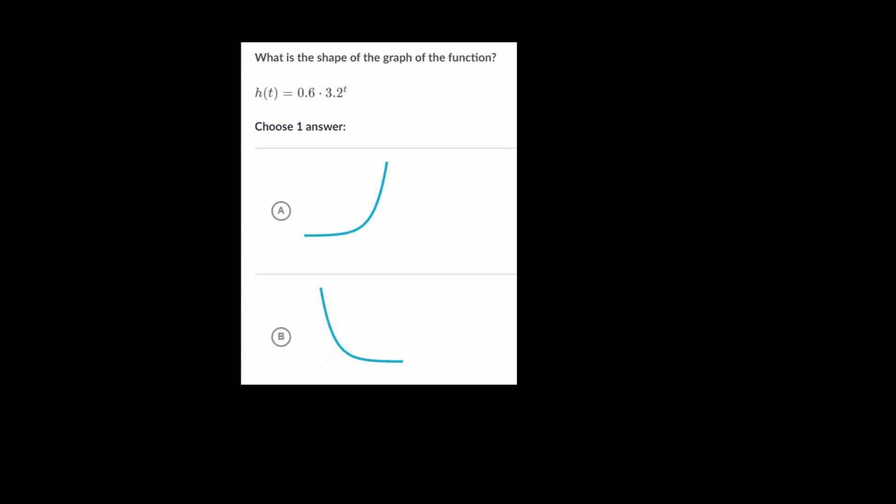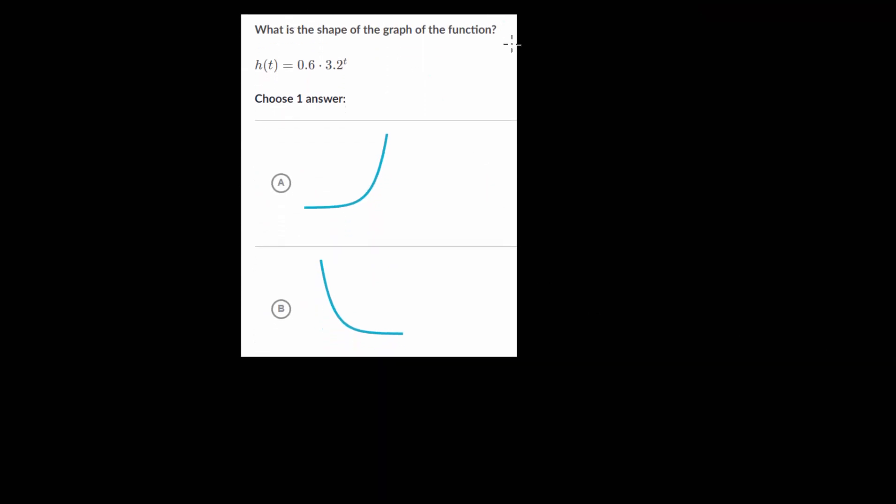Let's do another example. And we need to know the shape of the graph, or what the function looks like when you graph it. And again, notice the base here, and in this case, our base is greater than 1. So that indicates we're looking at exponential growth, and growth always increases for its y value or its function value as, in this case, the t value gets larger and larger. So as t increases, the function value increases as well.